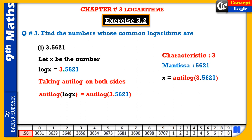Anti-log table میں .56 کو دیکھیں اور column two اور difference one کا use کریں۔ Table سے آیا three six four eight، اور difference one والا add کریں — دونوں ملا کر x = three six four nine (3649)۔